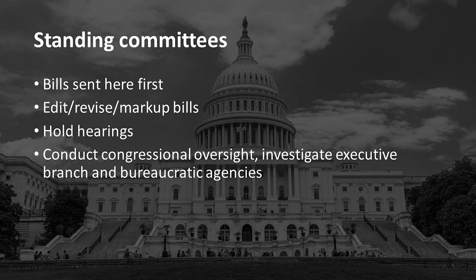How does Congress actually make and pass legislation? The vast majority of the work is done in standing committees — the most important type of committee. Bills are sent here first; once written, they go right to a standing committee. The standing committee's job is to edit, revise, and mark up bills. The committee holds hearings to gather information and hear from proponents and opponents. Once a bill has passed and become law, that standing committee will in the future conduct congressional oversight, investigating the executive branch and bureaucratic agencies to make sure the law is being enforced as Congress intended.